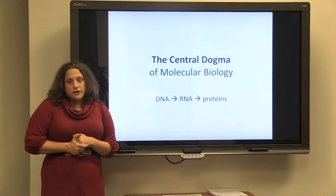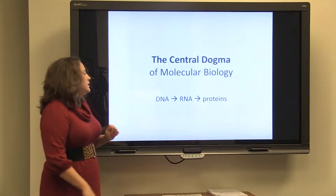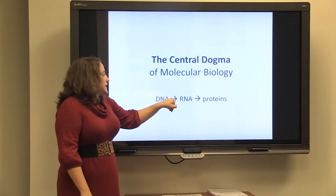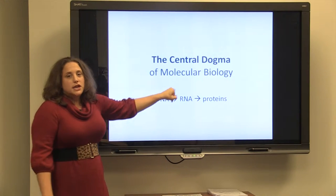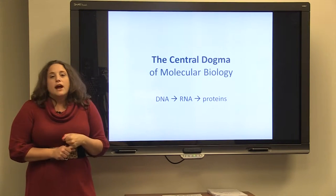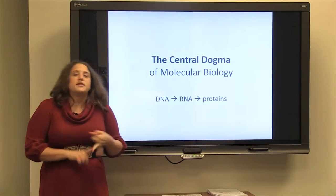The boiled down principles of the central dogma are that genetic information is stored in DNA, transcribed into RNA, and translated into proteins, which express traits that you can see or have tested, like freckles or blood type.